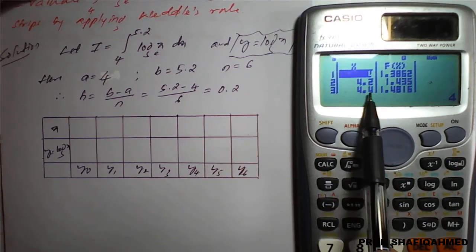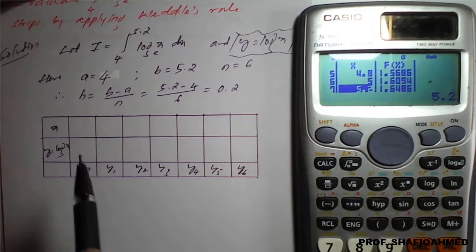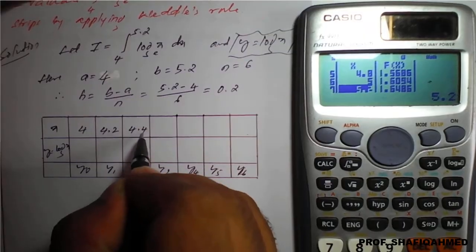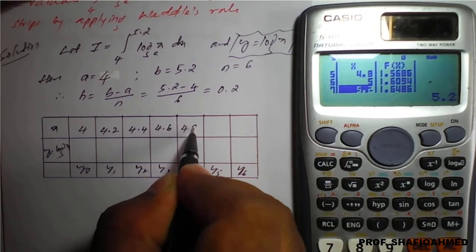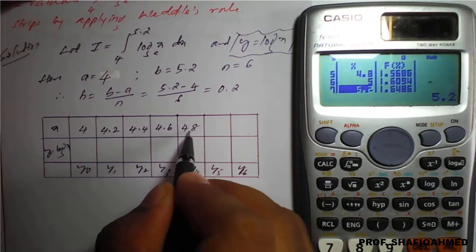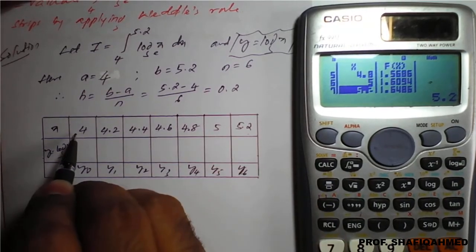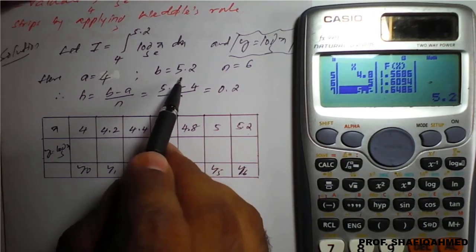It gives 4, 4.2, 4.4, 4.6, 4.8, 5, and 5.2. Starting is a, which is 4, and ending is 5.2, which is the value of b. Both are matching.